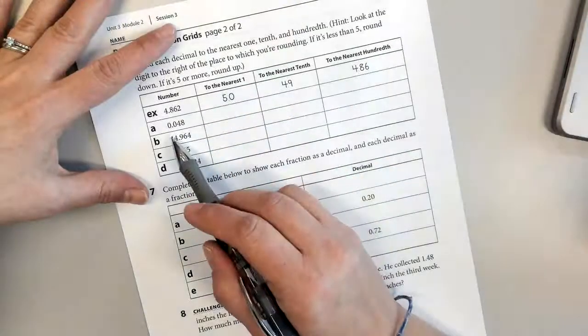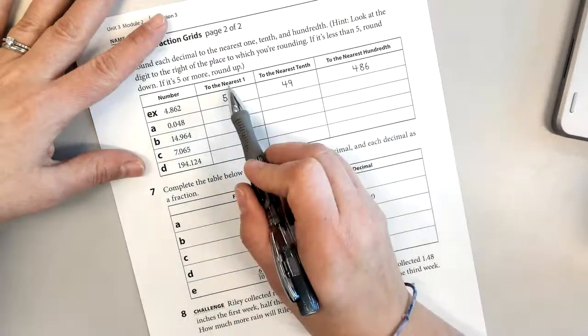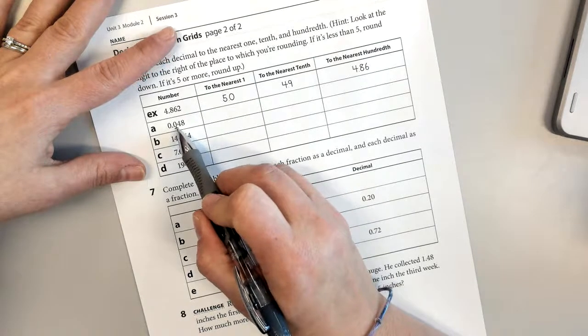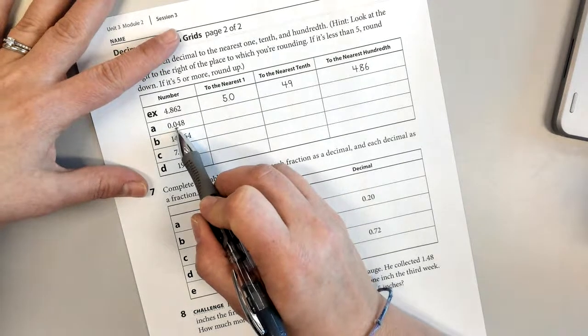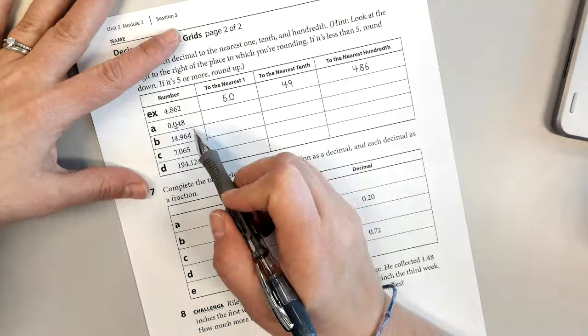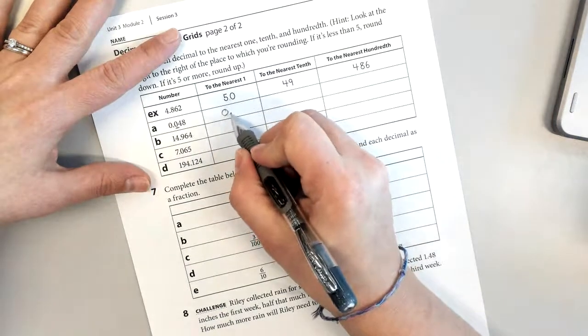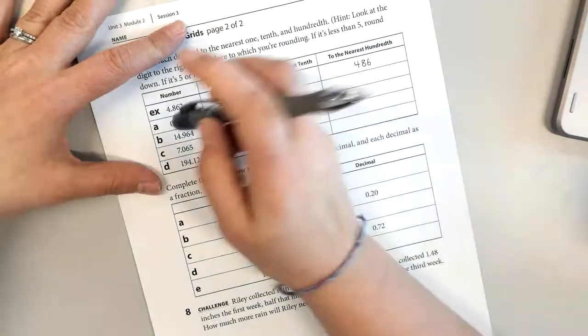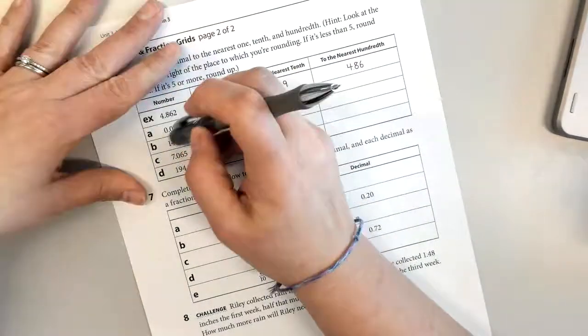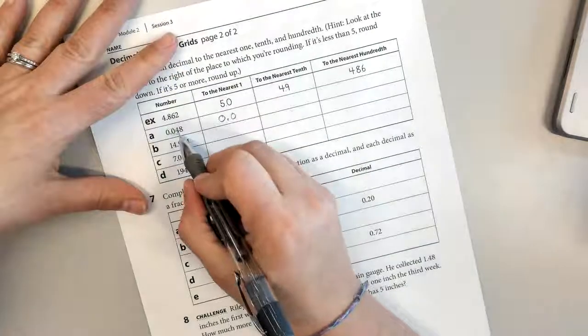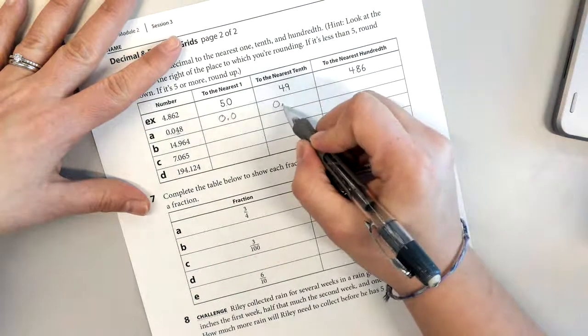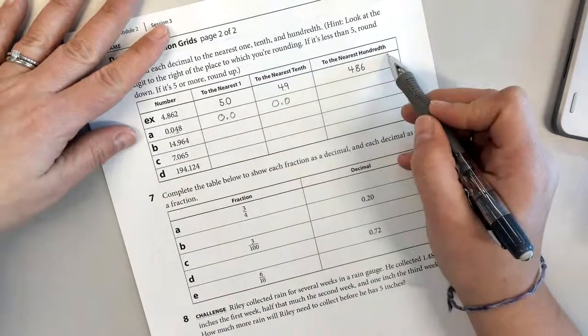So let's look at A. We're supposed to round to the nearest one here. So I have to look at the tenths place. Is this five or more? No, it's four or less, so we're going to let it rest. So it's zero and zero tenths to the nearest tenth. Okay, so if I'm going to do it to the tenth, now I need to look at the hundredths place. It's still four or less, so it's still zero.